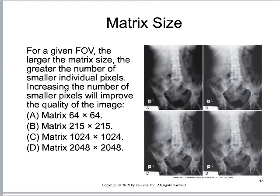For a given field of view, the larger the matrix size, the greater the number of tiny pixels, and increasing those pixels improves image quality. Matrix A is 64 by 64, matrix B is 215 by 215, and so on. Matrix D has the highest spatial resolution and best image quality because of its decreased pixel size and increased matrix size.